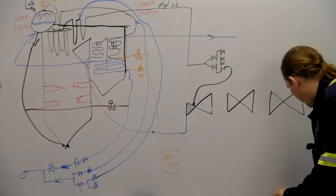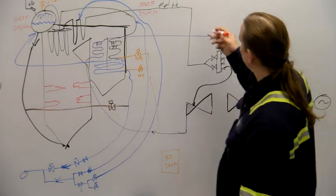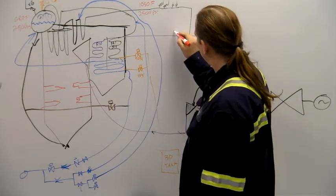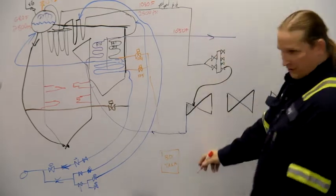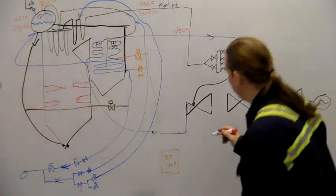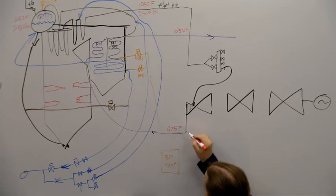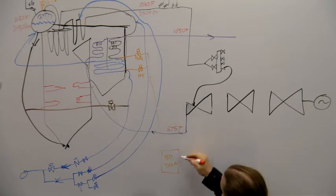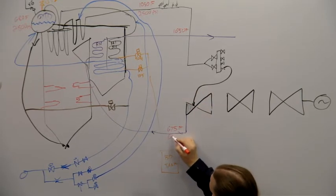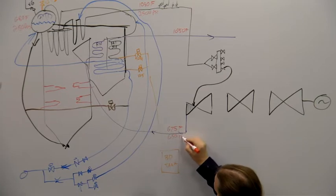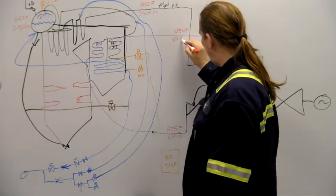How hot is hot reheat? 1050. Same temperature, 1050. How cold is cold reheat? 675, 680. Sure, 675, 680. I like those numbers. And then the pressure is like 650 on the cold and like 600 on the hot.